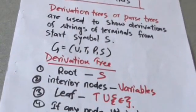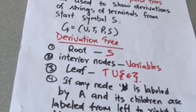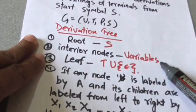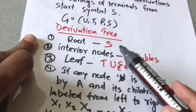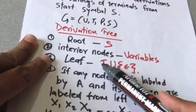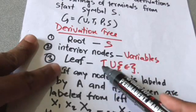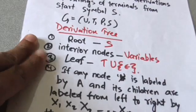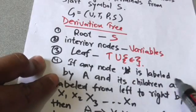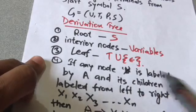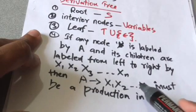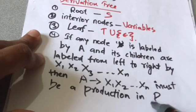A derivation tree is a tree whose root is labeled by S. Interior nodes are labeled by variables, and leaf nodes are labeled by terminals or the empty string. If any node in the tree is labeled by A and its children are labeled from left to right by x1, x2, ... xn, then A derives x1 x2 ... xn must be a production in P.